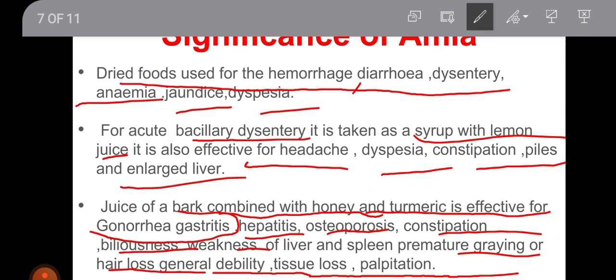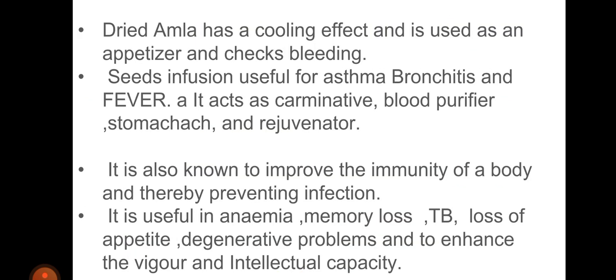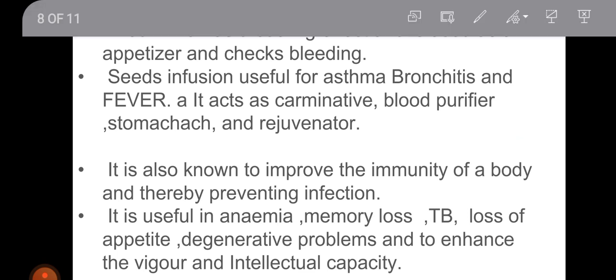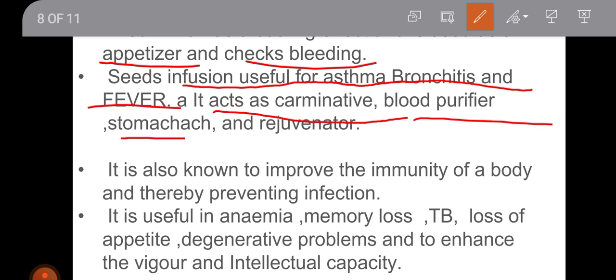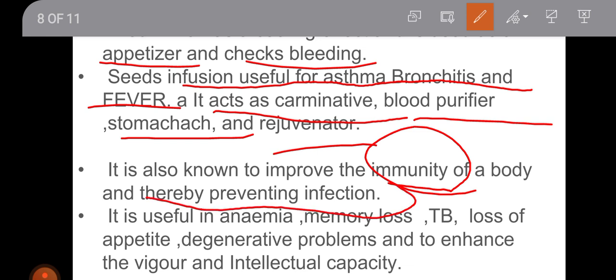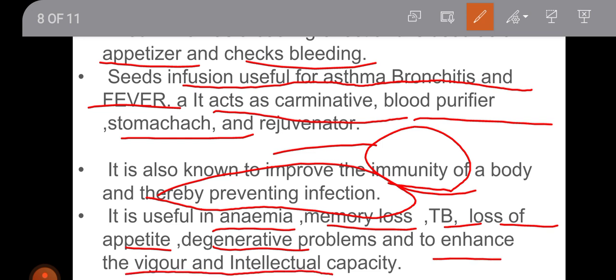The fruit of Amla is very useful. Dried Amla has a cooling effect and is used as an appetizer — whenever someone is not feeling like eating, taking Amla fruit powder will stimulate appetite. Seed infusion is useful for asthma, bronchitis, and fever. It acts as a carminative, blood purifier, and stomachic rejuvenator. It is known to improve immunity of the body, thereby preventing infections. It is also useful in anemia, memory loss, TB, loss of appetite, degenerative problems, and to enhance vigor and intellectual capacity.